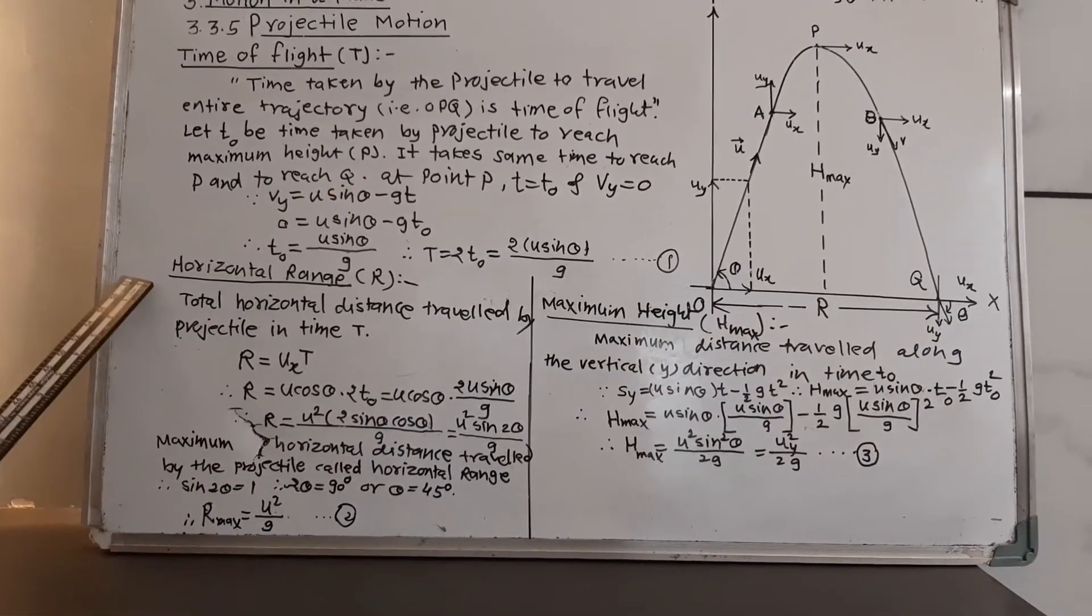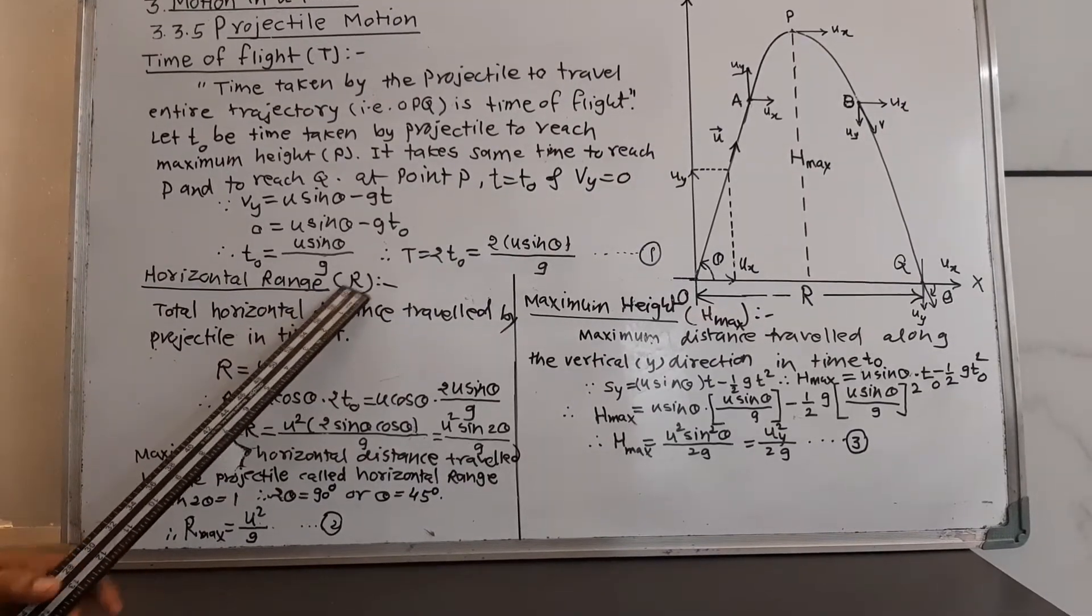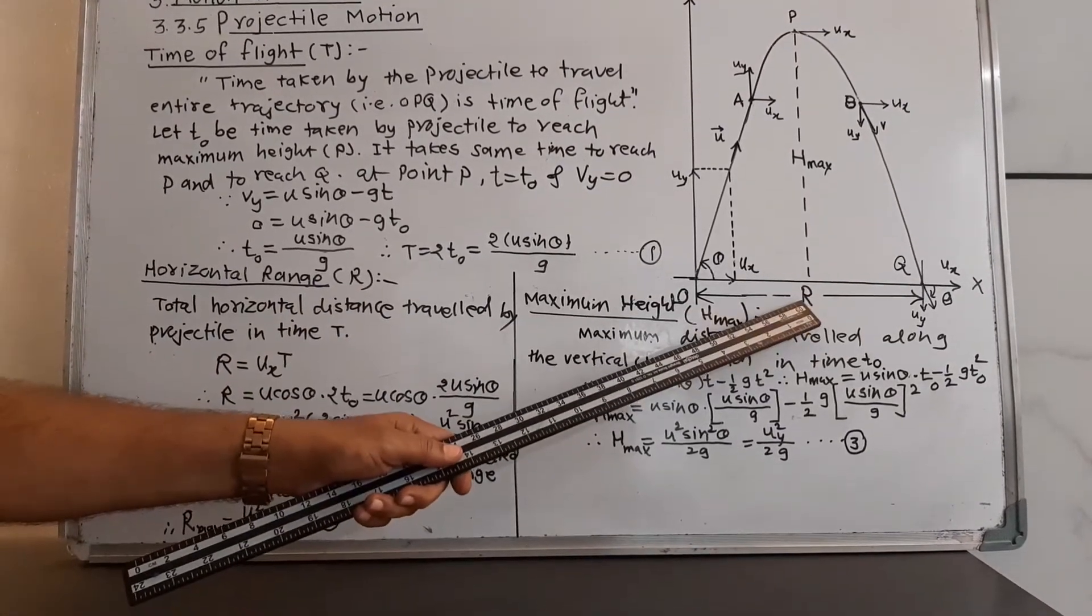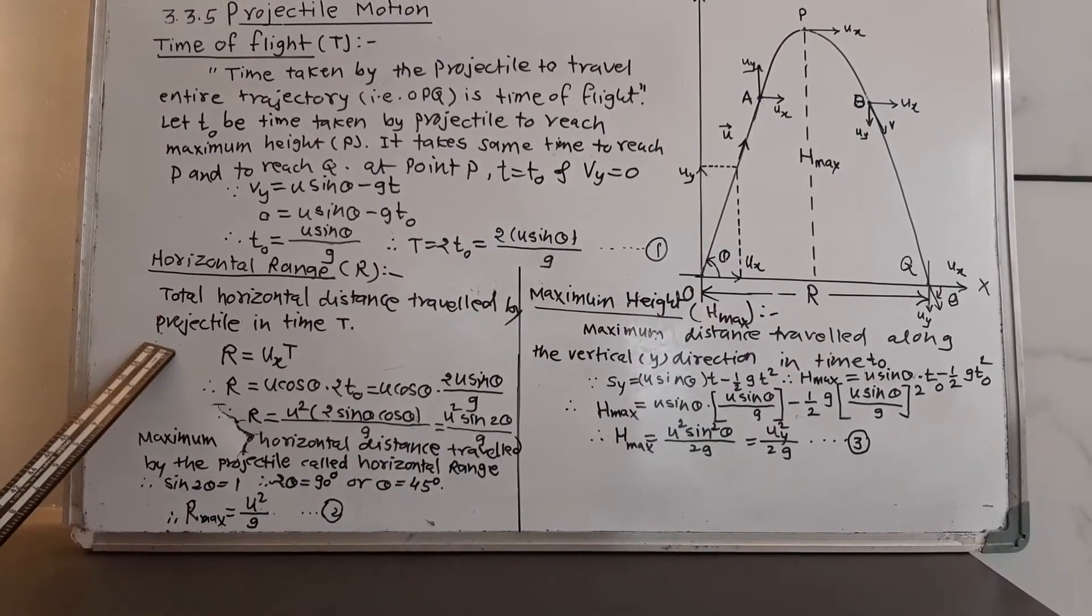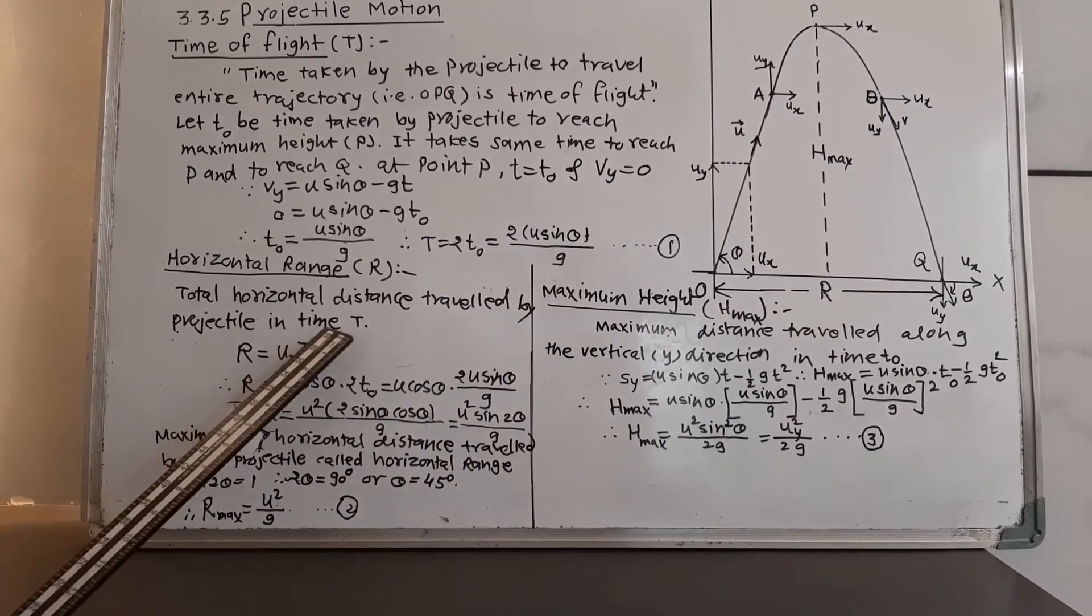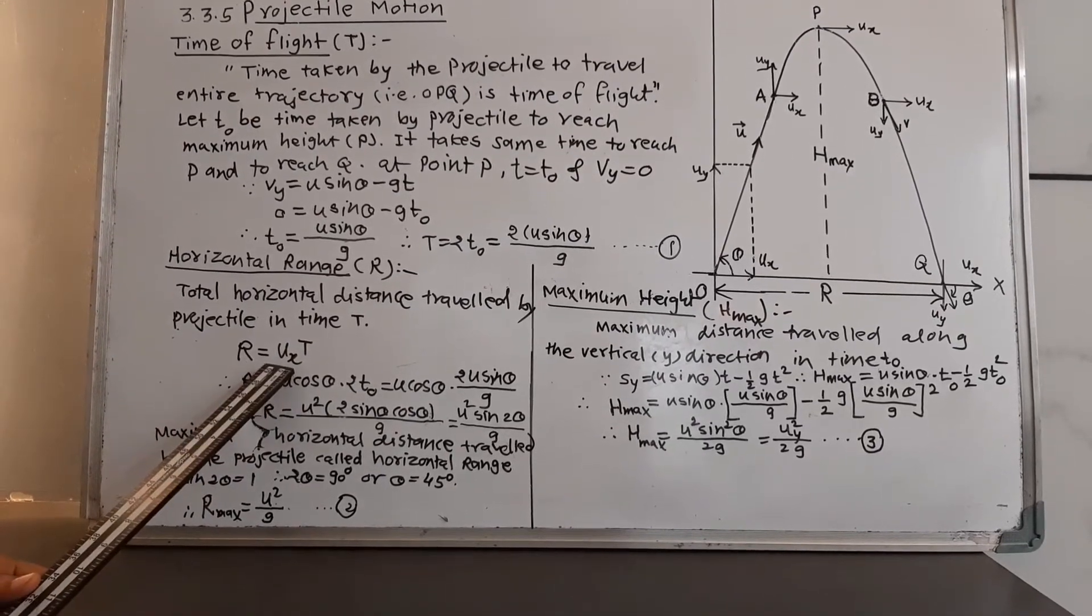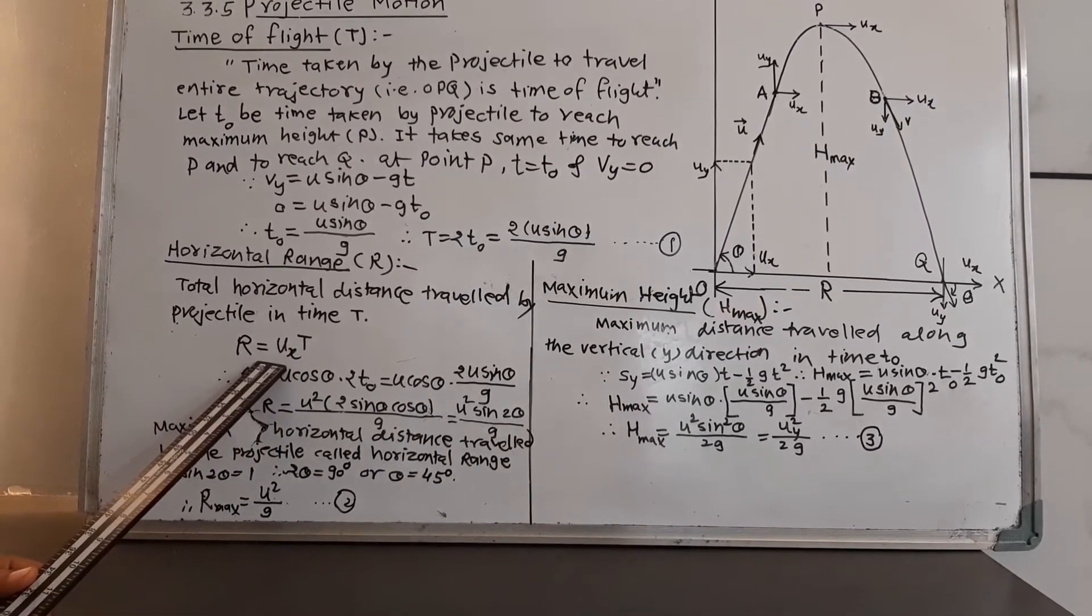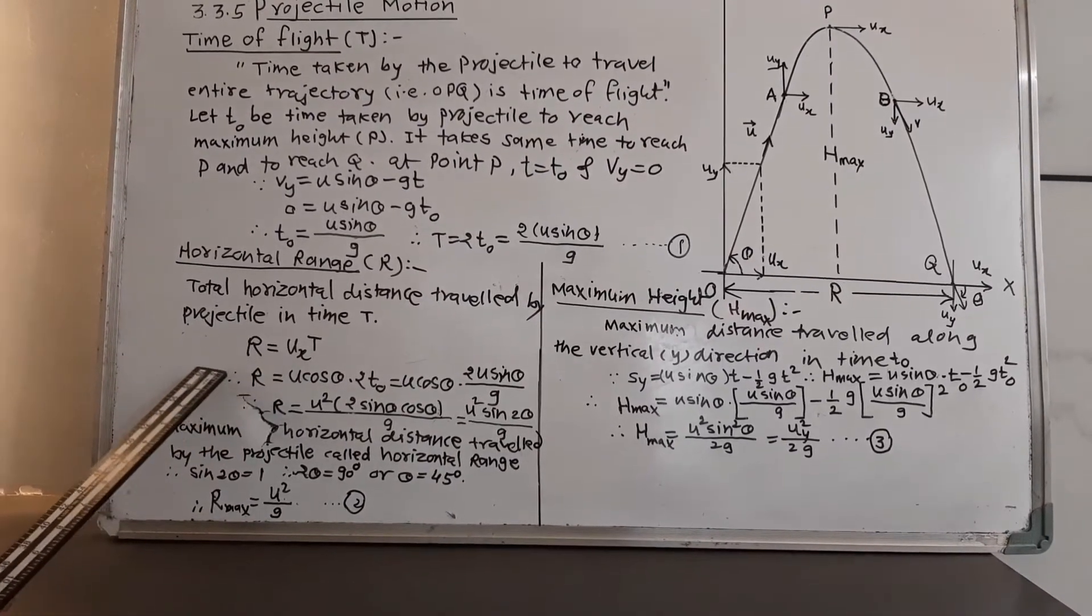Now, in order to have the horizontal range which is represented by the capital letter R in this figure also, the total horizontal distance travelled by the projectile in time capital T will be R equal to Ux into T. This is written according to the definition of velocity. Velocity is equal to distance upon time and therefore...